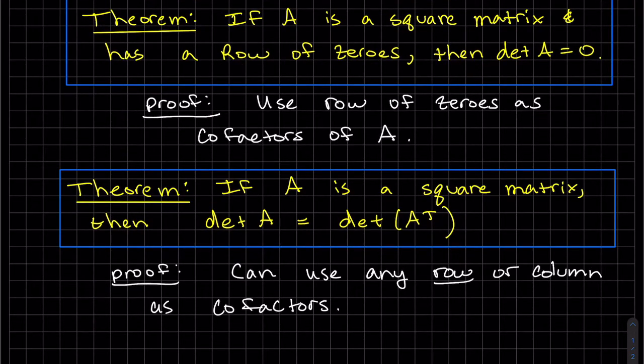You can use any row or any column to find the determinant. So a row of A transpose will be the same as a column of A and vice versa. You get the same answer no matter what. It's going to have the same determinant.